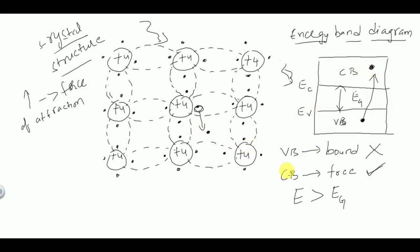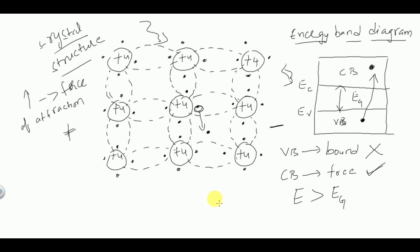An electron in the conduction band which is free is ready for current conduction under the application of external voltage. When you apply an external field to the semiconductor, all the electrons will move in a particular direction, causing current conduction.